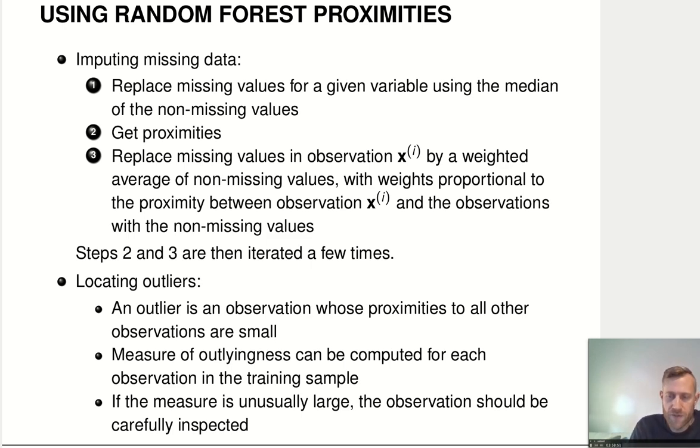And then we replace the missing values in that observation by a weighted average of the non-missing feature values. But we do the average so that those observations which have a high random forest proximity to the observation that we're trying to impute for, those observations that are close, they get a much higher weight in this average. And we can iterate that step two and step three a couple of times.